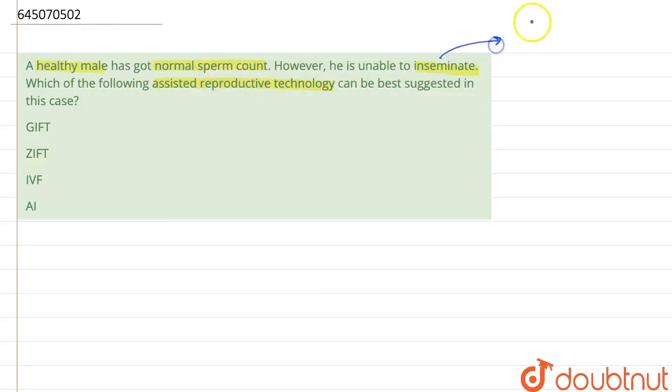All right, so here the male has normal sperm count but he's unable to inseminate, meaning that he's unable to eject the semen which consists of the sperms inside the female body.